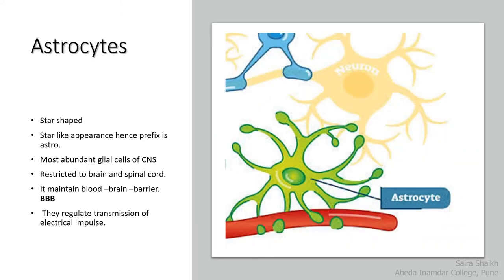Astrocyte is a glia cell present in the central nervous system. It is star-shaped. The green color structure in the figure is the astrocyte. It binds the nerve cell with the blood vessel, maintains the blood-brain barrier, and regulates the transmission of electrical impulse.